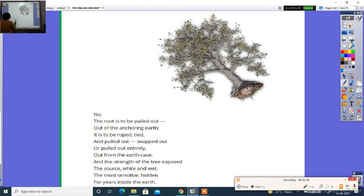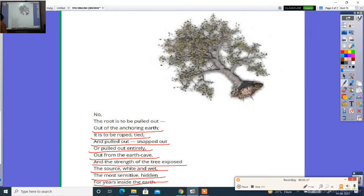The root is to be pulled out of anchoring earth. It is to be roped, tied and pulled out, snapped out or pulled out entirely from the earth cave. And the strength of the tree owes the source, white and moist, the most sensitive hidden for years inside the earth.